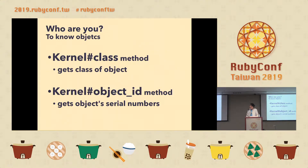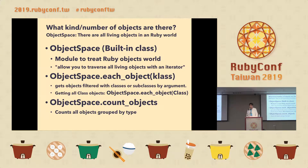And who are you? The Kernel class method gets the class object. The Kernel object_id method gets the object serial number. What kind or number of objects are there? ObjectSpace is a built-in class — a module to interact with Ruby object space. We can get all class objects using ObjectSpace.each_object(Class).